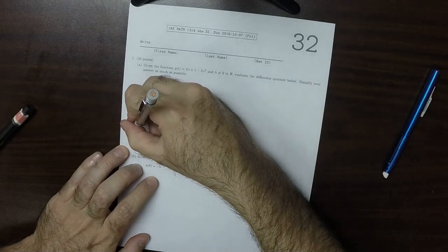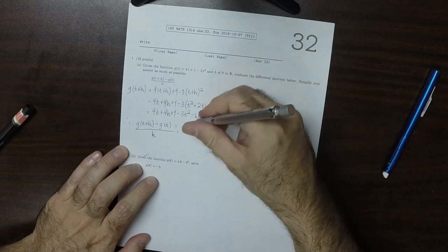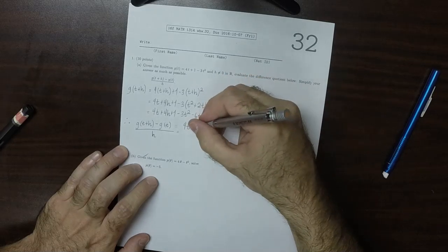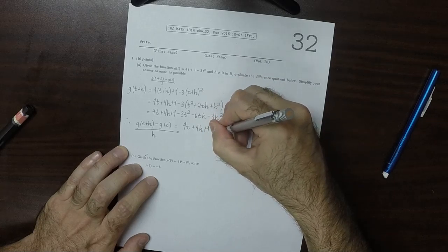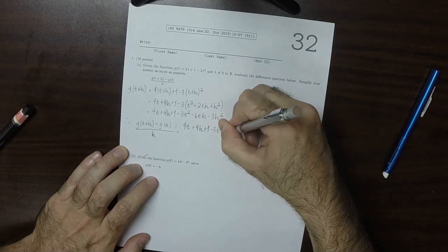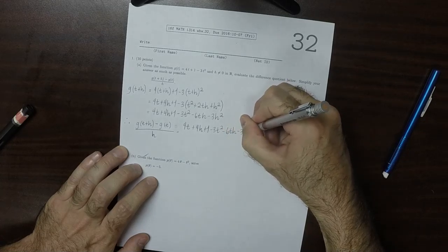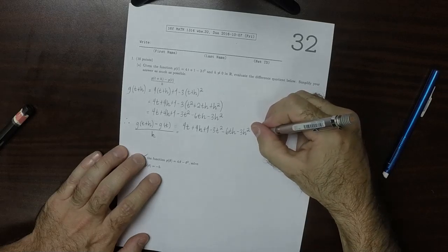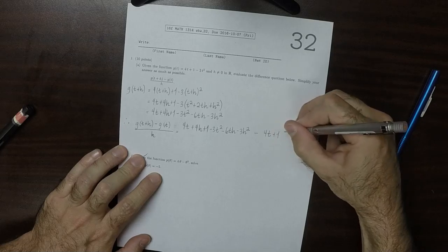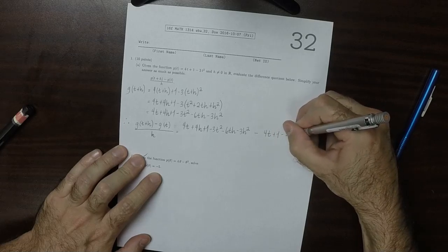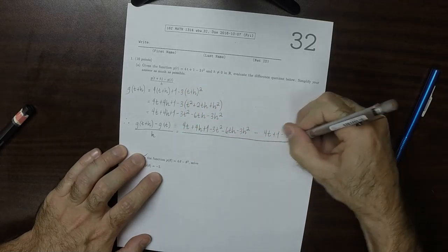That would be [4t + 4h + 1 - 3t² - 6th - 3h²] minus [4t + 1 - 3t²], and then all of this over h.